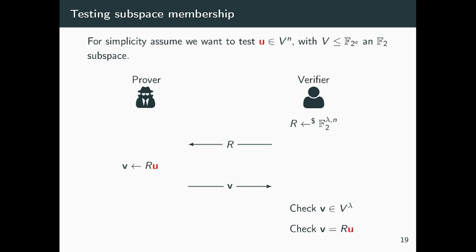For this reason, we introduce a subspace membership test. The basic idea is that we have a vector u, whose entries belong to a vector space V. We want to convince a verifier that all the entries of u belong to V, where V is a subvector space, an F2^e subvector space. The basic idea is that if we take a random linear combination of the entries of u, where the coefficients we use are only in F2, and this is necessary, then the result lies again in the vector space V.